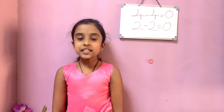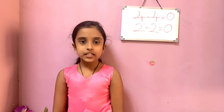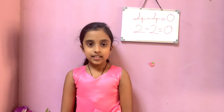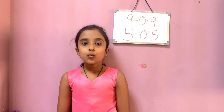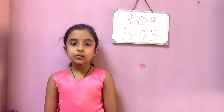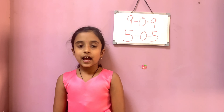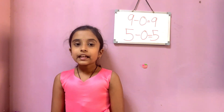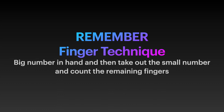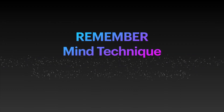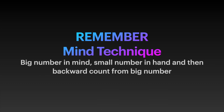Remember: when the same number is subtracted by itself, the answer will be zero. Like four minus four is zero, two minus two is zero, ten minus ten is zero, eight minus eight is zero. When zero is subtracted from any number, the answer will be the number itself. Like eight minus zero is eight, nine minus zero is nine, twenty minus zero is twenty. Remember: Finger Technique — big number in hand, take out the small number, and count the remaining fingers. Mind Technique — big number in mind, small number in hand, and then backward count from the big number.